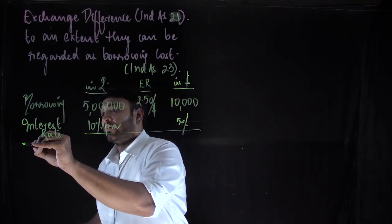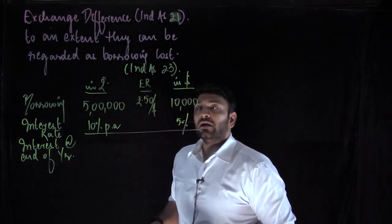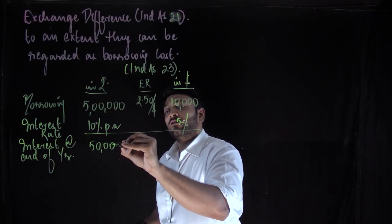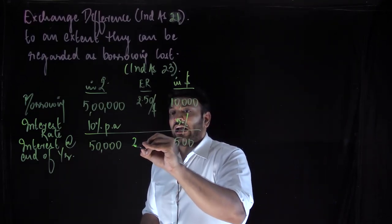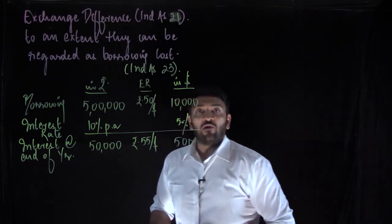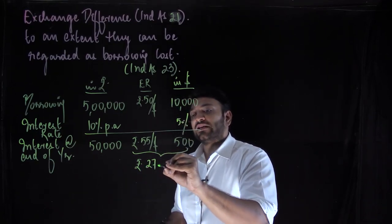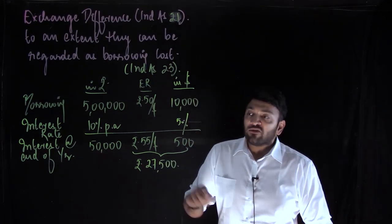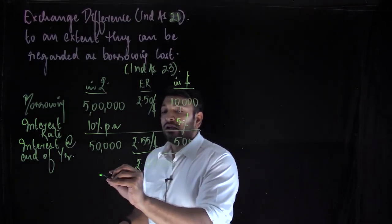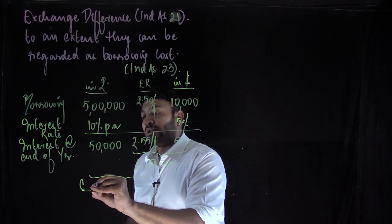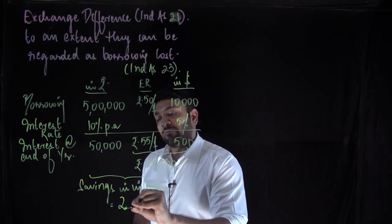Comparing the two scenarios, I can identify savings in interest of about 22,500 rupees. Now let's assess this with respect to Ind AS 21 — exchange differences. According to Ind AS 21, the dollar borrowing is a monetary item, so I must compulsorily restate monetary items at the closing rate. With the dollar rising from 50 to 55, my liability increases: to repay $10,000, I now need 5,50,000 rupees instead of 5,00,000. This gives an exchange loss of 50,000 rupees.